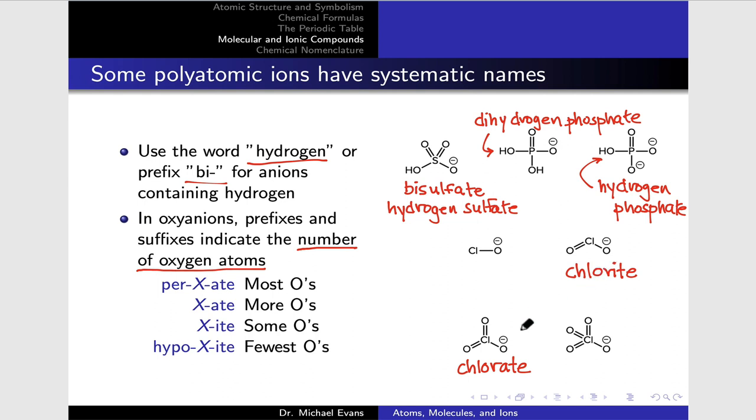If we add yet another oxygen, adding oxygen actually tends to be associated with the prefix per, so perchlorate when we go from three oxygens in chlorate to four in perchlorate. And then if we go back to chlorite and we remove an oxygen we get to hypo, hypo indicating a deficiency of oxygens, chlorite. So a deficiency of oxygen relative to chlorite is hypochlorite.